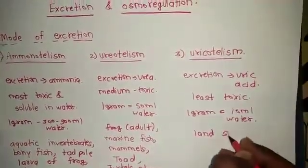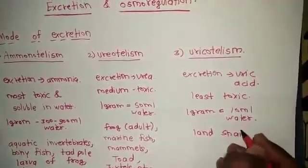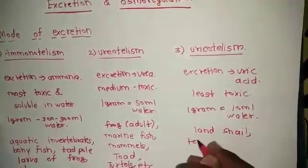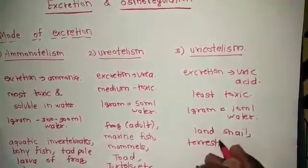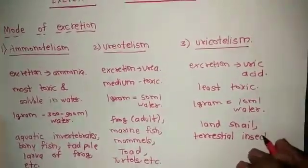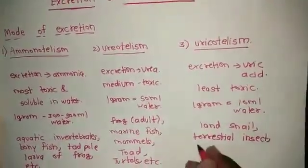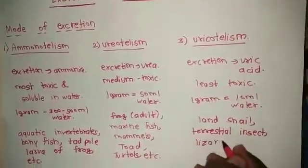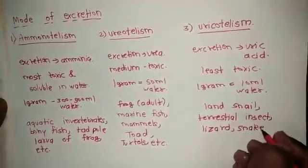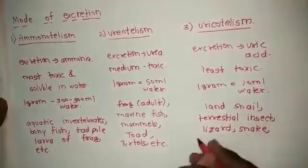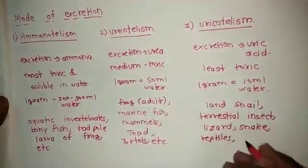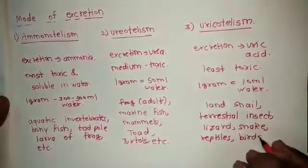Mainly uricotelic animals are land snail, terrestrial insects, lizards, snakes, reptiles, and birds, etc.